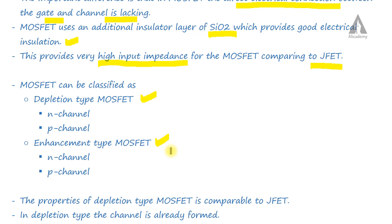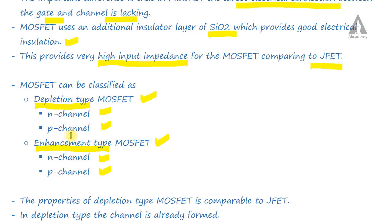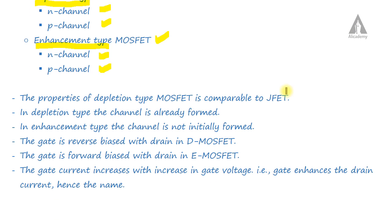We can classify MOSFETs as depletion type MOSFET and enhancement type MOSFET. Each of these can be further divided into N-channel or P-channel types. The classification into N-channel or P-channel is based on the type of channel formed. The properties of the depletion type MOSFET are comparable with JFET.